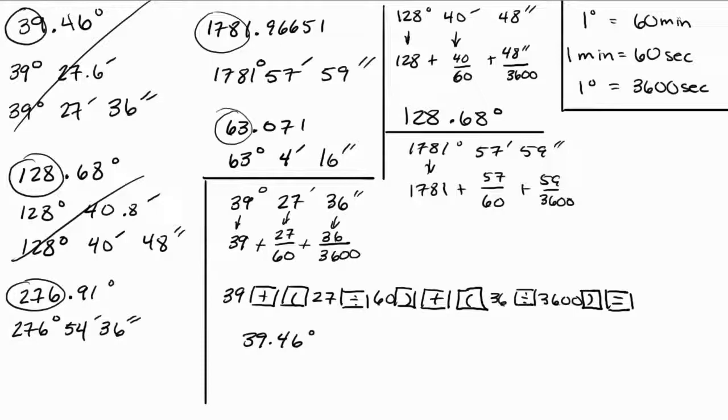So what you're going to do is you're going to type in 1781, so I'm going to do it with you, 1781, hit the plus sign, then open a parentheses, and then type in 57 for 57, then divide, then 60, then close your parentheses, plus open parentheses, 59, divided by 3600, close parentheses, and then hit enter or equal, and you'll end up with 1781.966389.